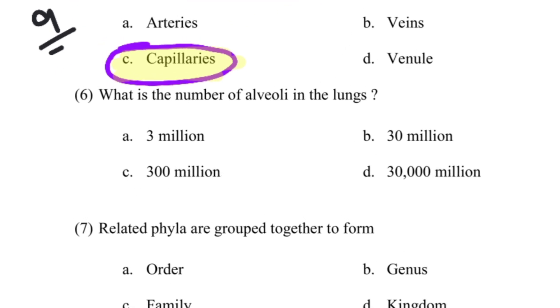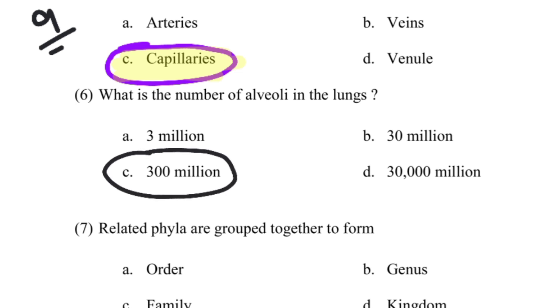The lungs contain structures called alveoli, and the number of alveoli in the lungs is 300 million. This is a fact you should learn directly from the textbook.